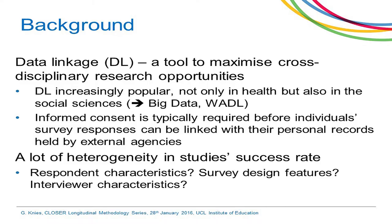One of the things that we encountered — I'm working in the Understanding Society and British Household Panel Survey team — is that when eight years ago in 2008 we asked our study members whether they would be happy for us to link their DWP records to their survey responses, we were pretty shocked to see that only 40% consented, when on the MCS and other cohort studies those linkage or consent rates were more in the region of 70, 80, or even 90%.